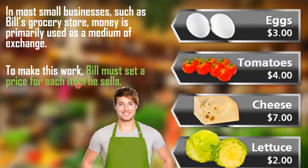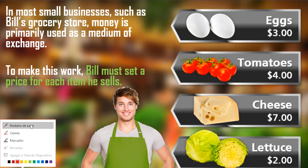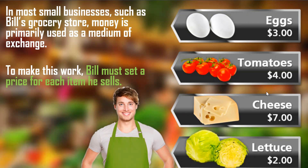In order to understand that, we're going to imagine a situation. In most small businesses, such as Bell's grocery store, money is primarily used as a medium of exchange. Every time you go to a supermarket or a store, you need to pay — they're not going to give you the items for free. So the owners of the businesses, in this case Bill, must set a price for each item. If you go to a supermarket, it's really common to see the prices of items per kilogram — eggs, tomatoes, cheese, lettuce, and everything else has a price.